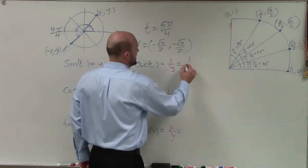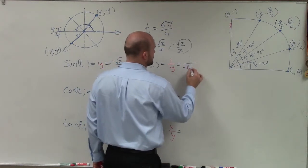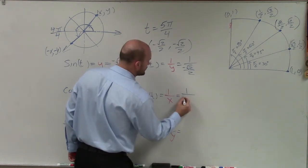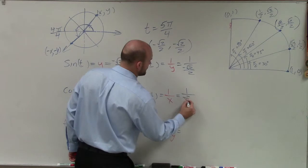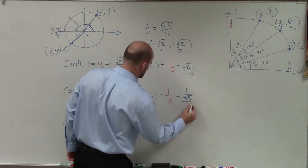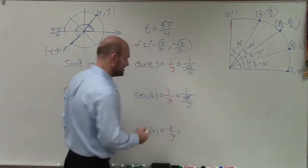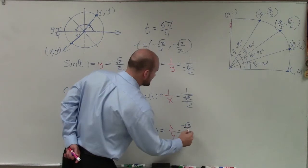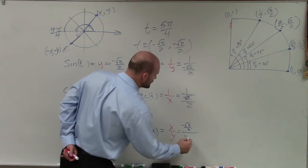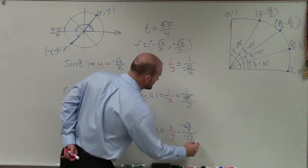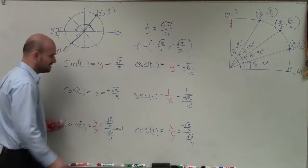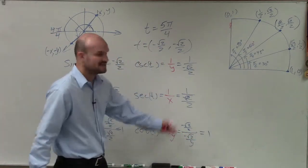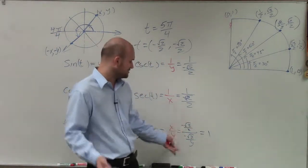The cotangent is going to be 1 over the y coordinate, which is √2/2. The secant is going to be 1 over the x coordinate. The cotangent is x over y. Just like it was for tangent, that's going to simplify into 1 as the negative signs divide out.